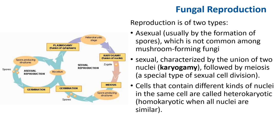Reproduction in mushrooms is of two types: asexual, usually the formation of spores, which is not common among mushroom-producing fungi; and sexual, characterized by the union of two nuclei (karyogamy) followed by meiosis, a special type of sexual cell division. Cells containing different kinds of nuclei in the same cell are called heterokaryotic; homokaryotic when nuclei are similar. Asexual spores germinate, form mycelium, produce spores, and continue the cycle — not too common in mushroom-producing fungi.